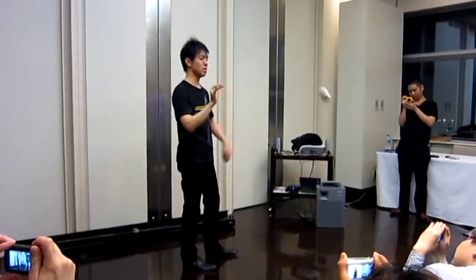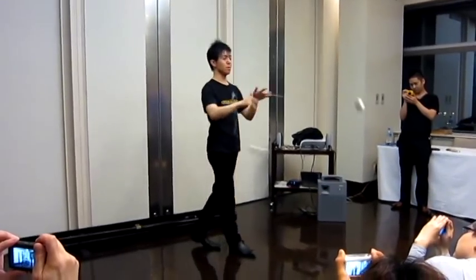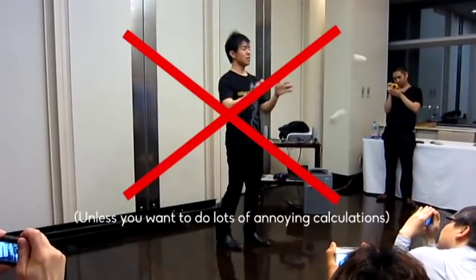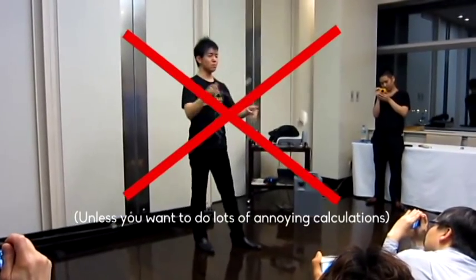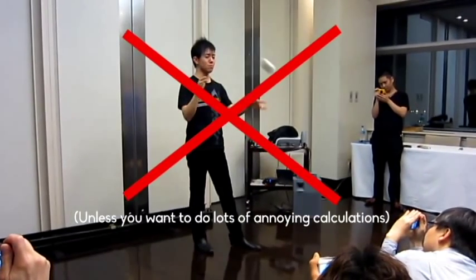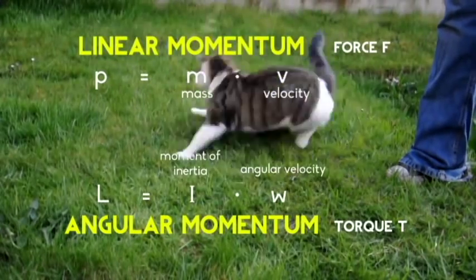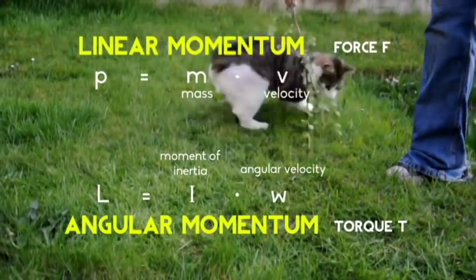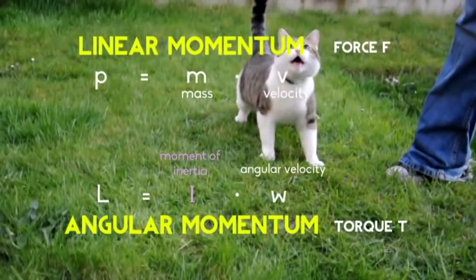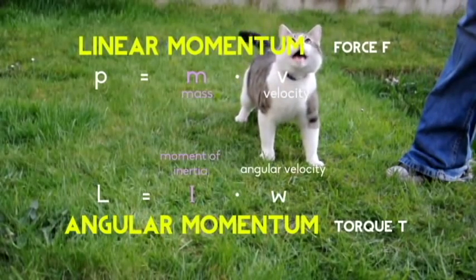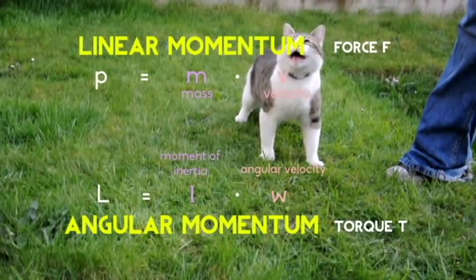But linear momentum only describes what is happening for objects moving in a straight line. What if the object is moving in a circle or an ellipse? Or more generally, what if it's moving at an angle? Angular momentum is analogous to linear momentum. Moment of inertia replaces mass, and angular velocity replaces velocity.